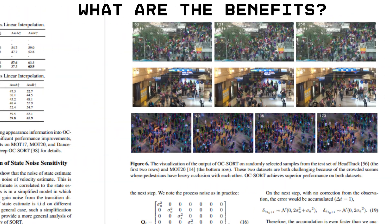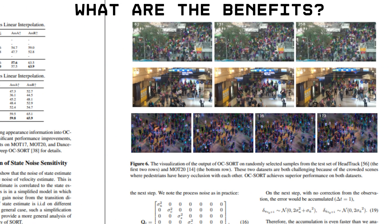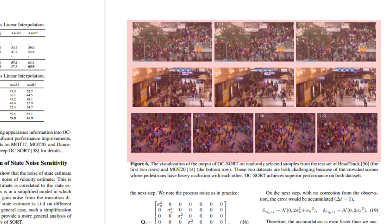What are the benefits? Robust to occlusion — it can recover from objects being blocked or hidden. Handles complex motion — works well even when objects don't move in straight lines. Fast and simple — runs in real time and is easy to use. Works across different datasets — performs well without needing lots of tweaks.